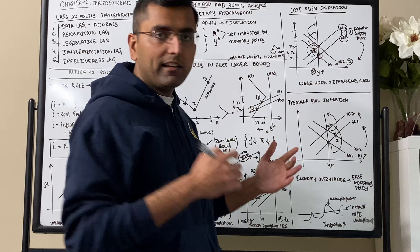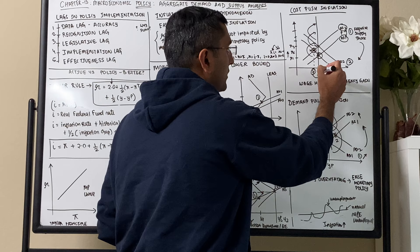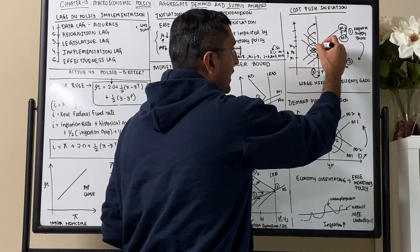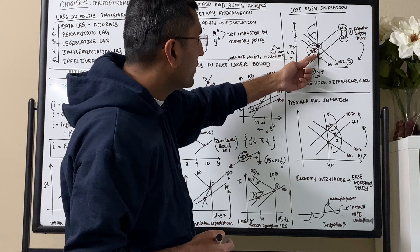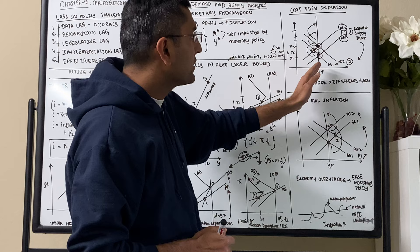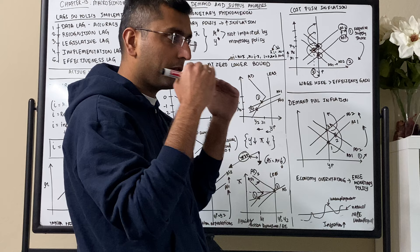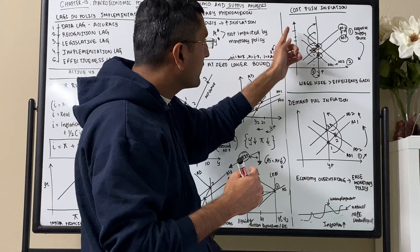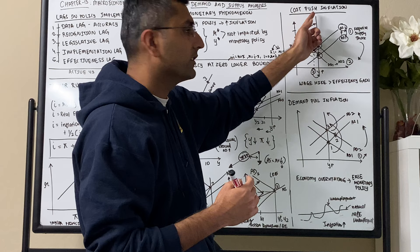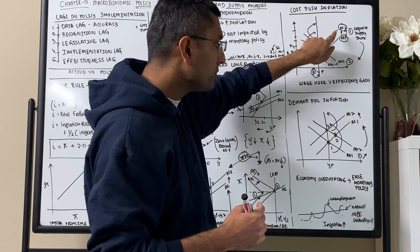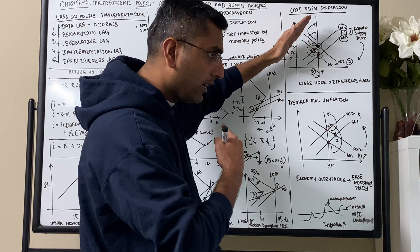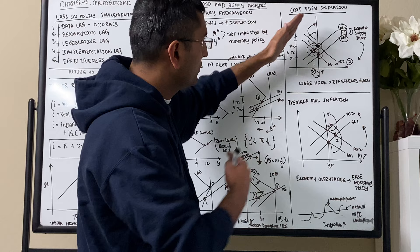Then what happens is the worker will produce more and output gets back up, but at that time demand goes up as well. So inflation goes from point 2 to point 3 instead of back to point 1. Because the wage has already gone up, the AS curve shifted from AS1 to AS2, and then demand went up too. So inflation continues to spiral upward. That is cost-push inflation — when a negative supply shock triggers a demand-side increase as well.